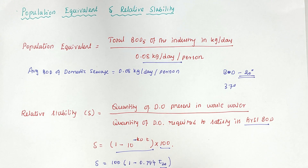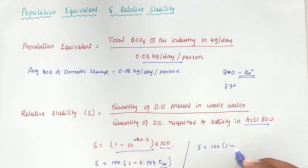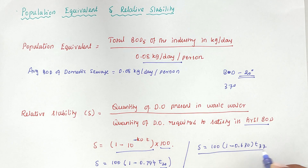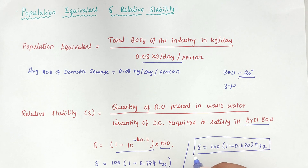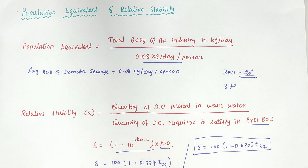If we maintain 37°C, the formula becomes: S = 100 × (1 − 0.630^t₃₇). In India, we use only the 37°C formula because maintaining 20°C is very costly. We will see more in the next video — thank you.